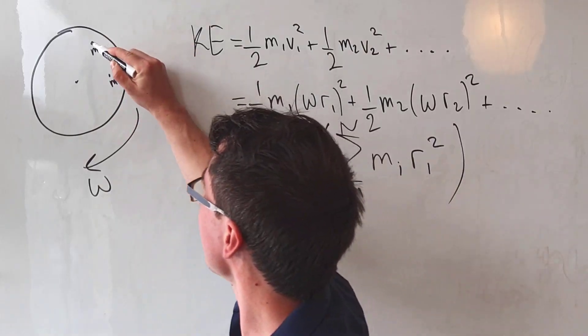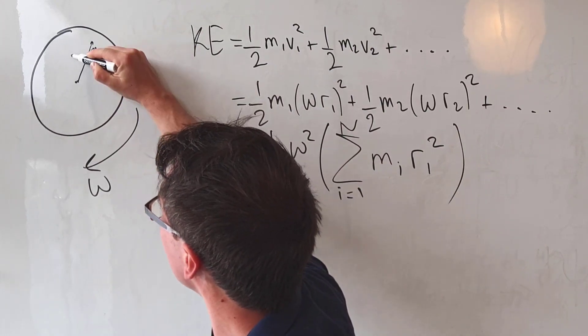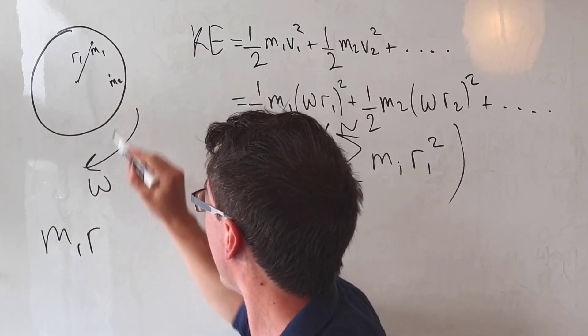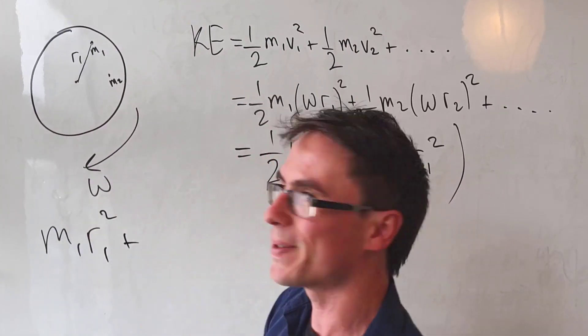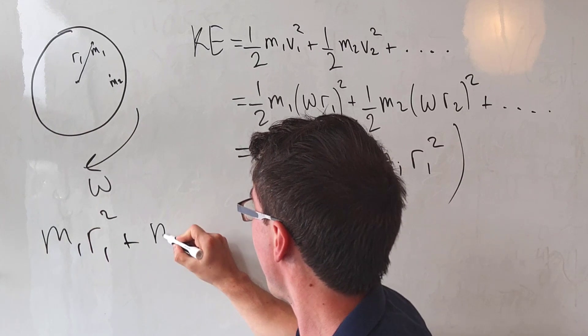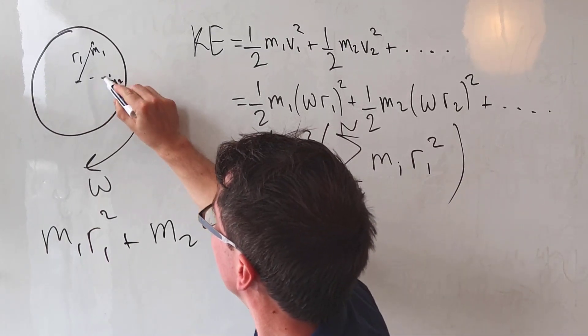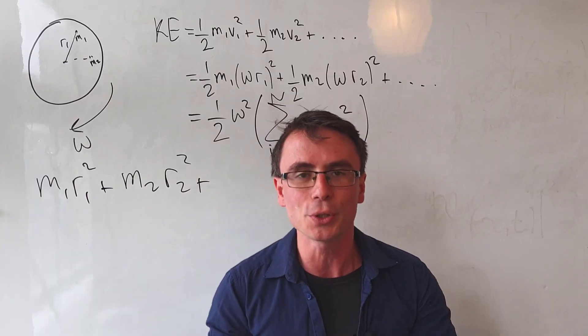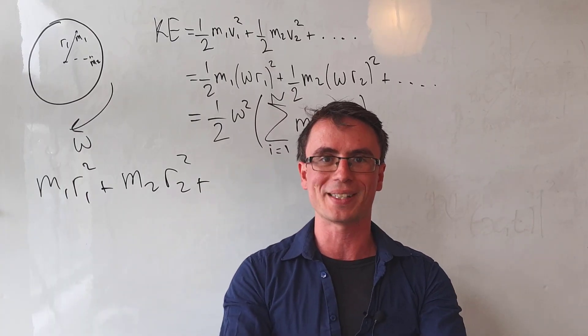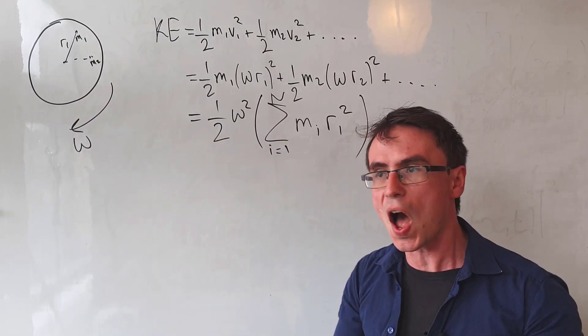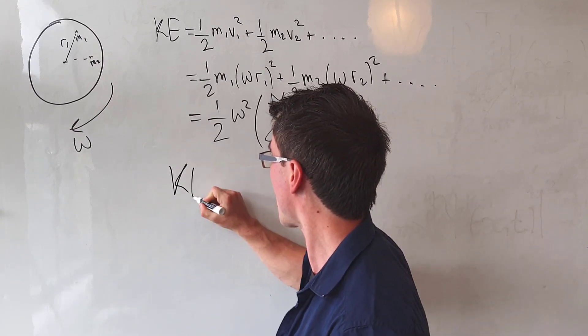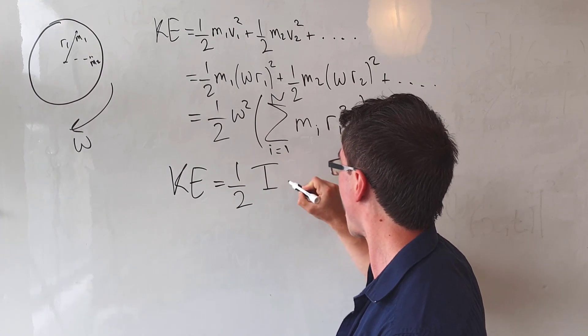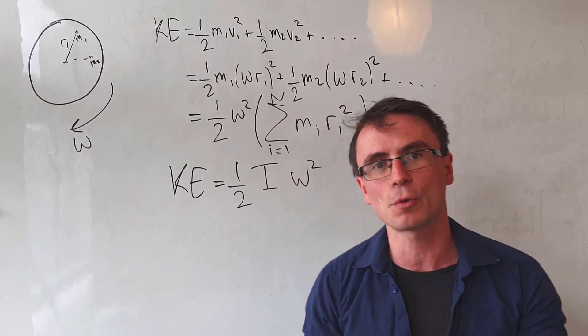In other words, we take this particle m1 and its radius r1 and we take m1 r1 squared, and to that we add m2 and its distance which is going to be r2 squared, and we do that for all the particles in the disc. We typically call this I, which gives us a final expression for the kinetic energy of a half I omega squared.